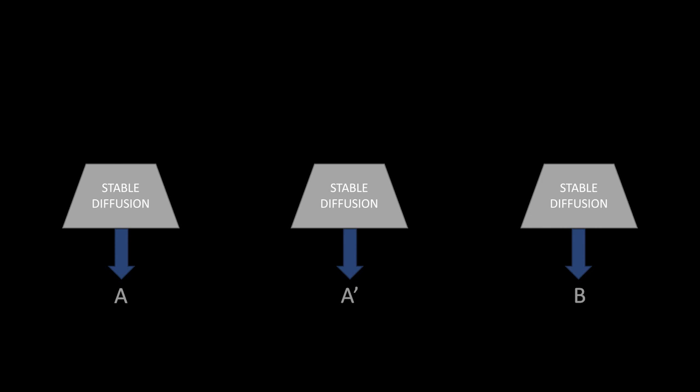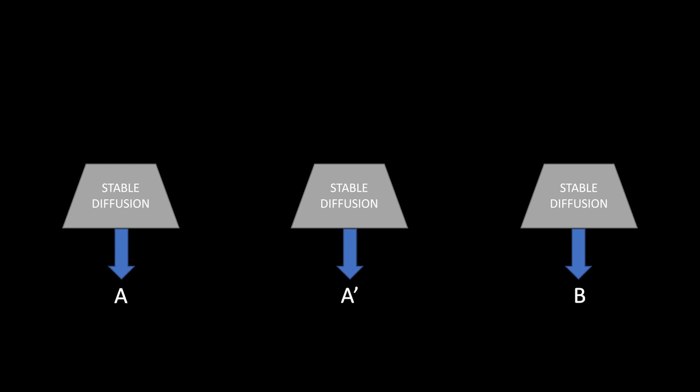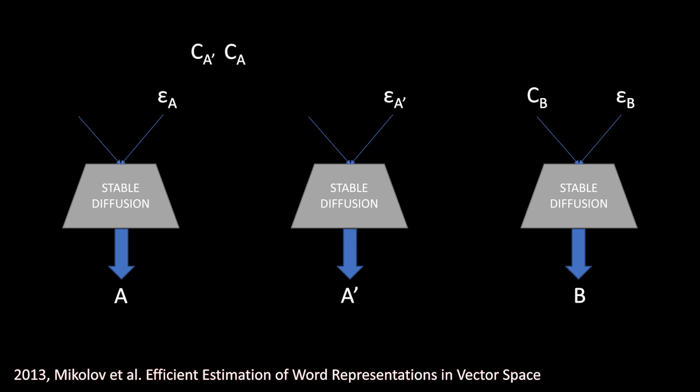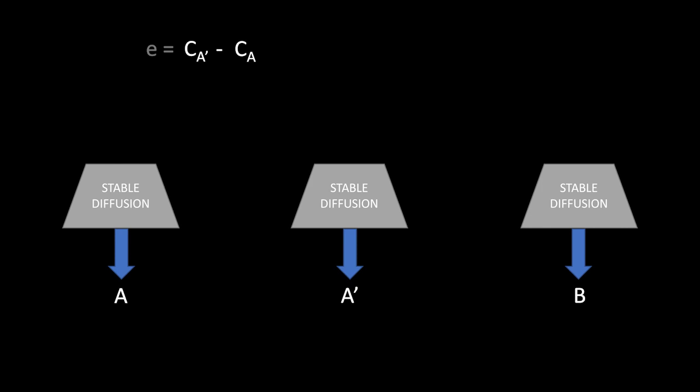Assume we generate the input images A, A prime, and B via regular stable diffusion image generation process from their corresponding conditioning vectors C and initial noise vectors epsilon. Inspired by Word2Vec, in order to carry out an image analogy, we perform a sequence of algebraic operations inside the latent space of the stable diffusion model. We calculate the residual conditioning vector C_A' minus C_A, giving us the vector representation of the analogy, e, encoded in the latent space.